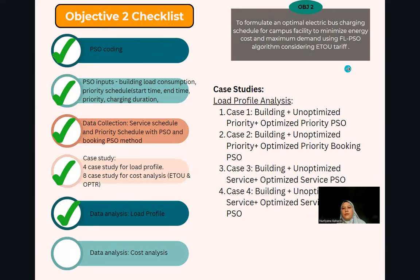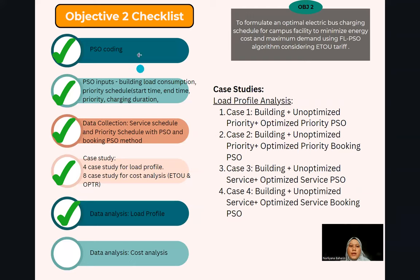Objective two checklist: to formulate an optimal electric bus charging schedule for campus facility to minimize energy cost and maximum demand using FLPSO algorithm, considering ETAW tariff. The first step is the PSO coding using MATLAB. The PSO input for the coding includes the building load consumption, priority schedule, start time, priority, and charging duration — these are results from objective one. I have 4 plus 8 case studies: 4 for load profile analysis and 8 for cost analysis. The comparison will be done with and without ETAW tariff. The load profile data analysis is also done.